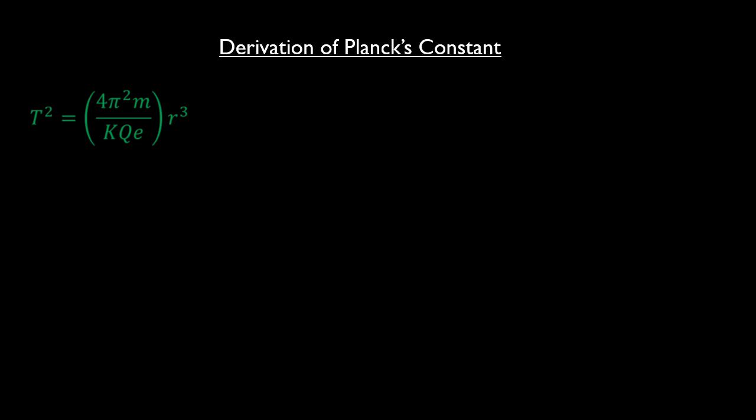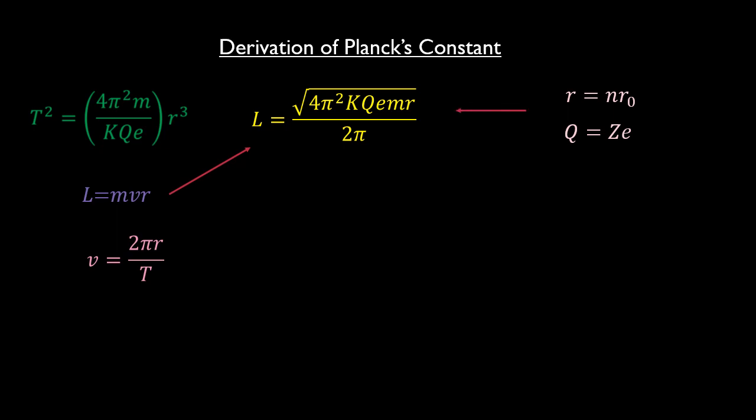As we saw earlier, the angular momentum is given by mvr. If we sub in the expression for velocity and the period according to Kepler's third law into this equation, we get the following yellow expression. At this point, we postulate that the radius r is an integer multiple n of a fundamental radius r0. Furthermore, we know from elementary physics that the charge of the nucleus is the atomic number z times the charge of one electron, little e. Let's sub in these two expressions in here and factorize out z and n to have this.